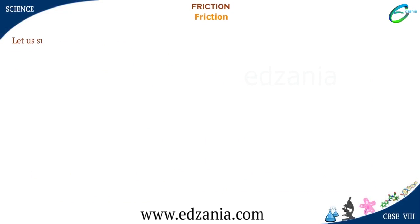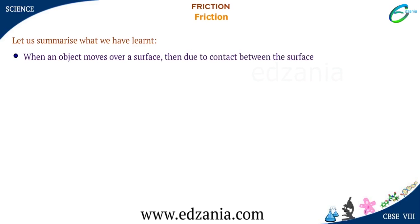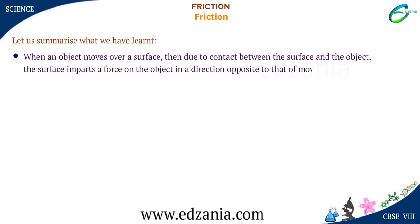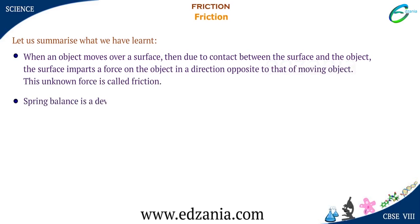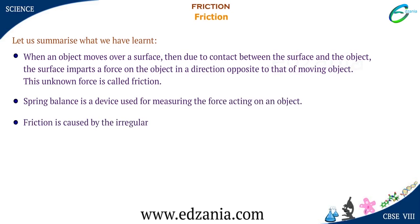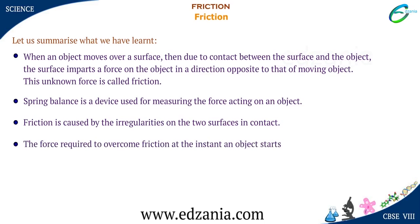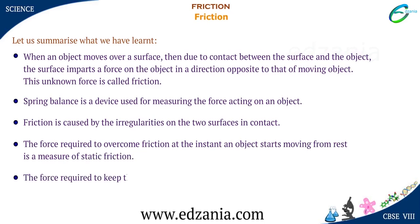Summary. Let us summarize what we have learned. When an object moves over a surface, then due to contact between the surface and the object, the surface imparts a force on the object in a direction opposite to that of the moving object — this force is called friction. A spring balance is a device used for measuring the force acting on an object. Friction is caused by the irregularities on the two surfaces in contact. The force required to overcome friction at the instant an object starts moving from rest is a measure of static friction. The force required to keep the object moving with the same speed is a measure of sliding friction.